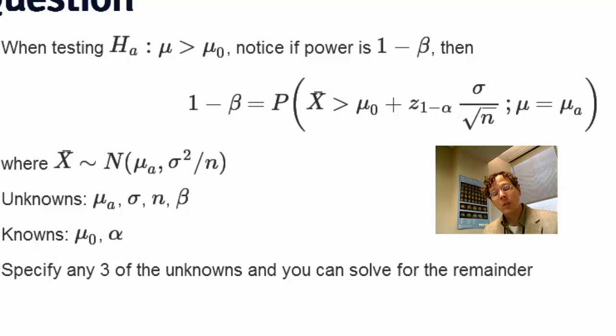Otherwise, what you could do is you could say here's a power that I want, here's a mean that I'd like to detect, and here's a sigma that I can tolerate, and then I'd like to solve for the n that would allow me to have that power, maybe in the process of planning a trial.